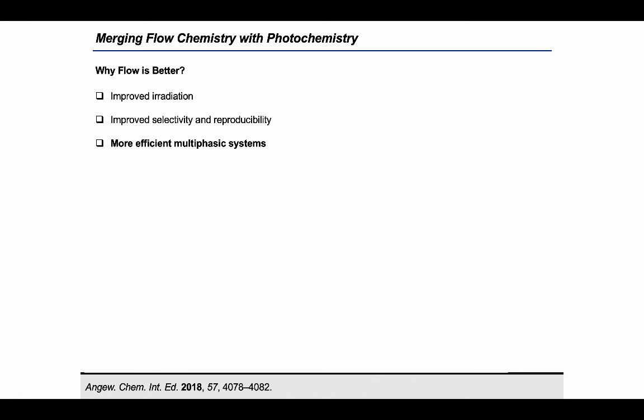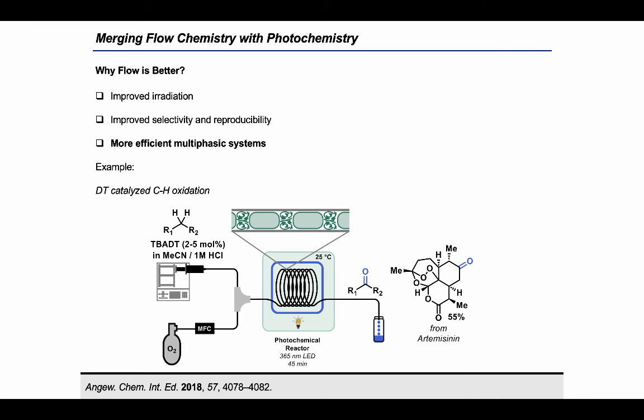Another remarkable application of continuous flow photochemistry is when multiphasic systems are involved. For example, in a DCH oxidation reaction, oxygen gas was employed in an efficient way, delivering products in a scalable manner.